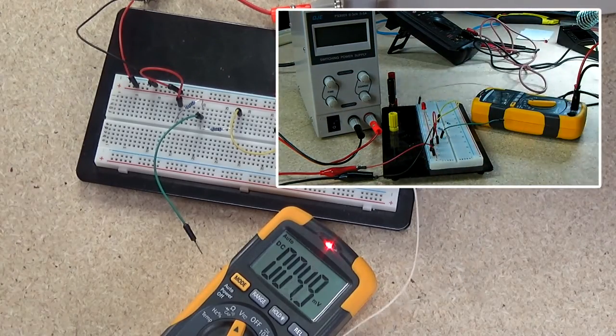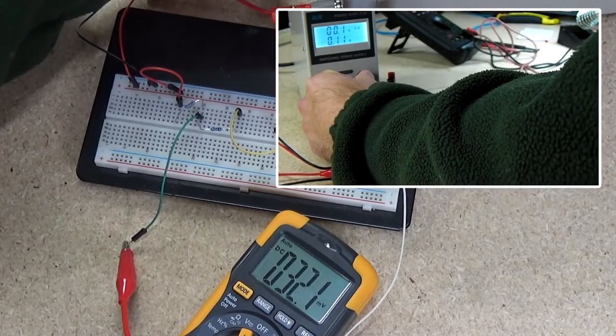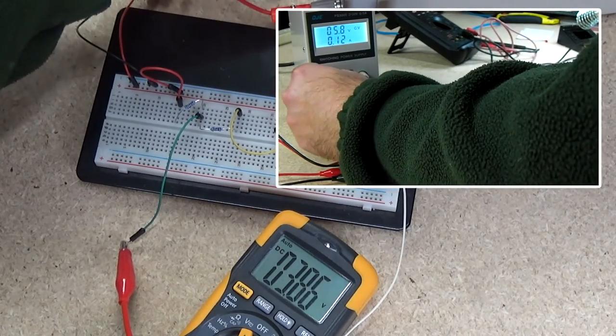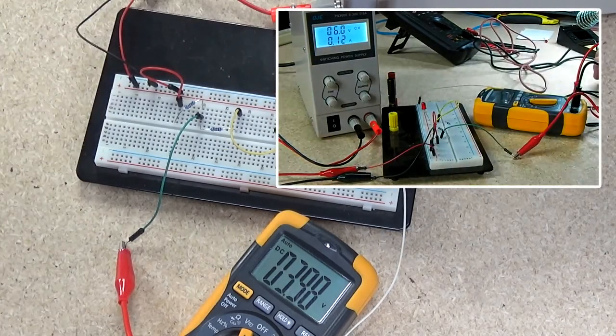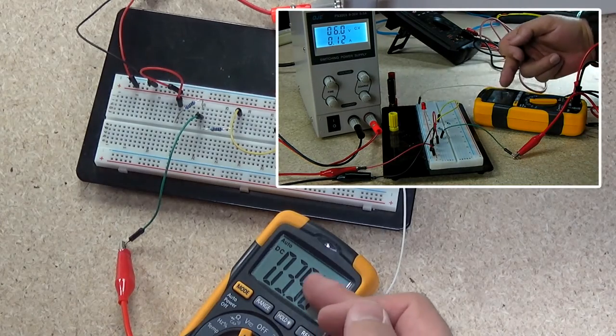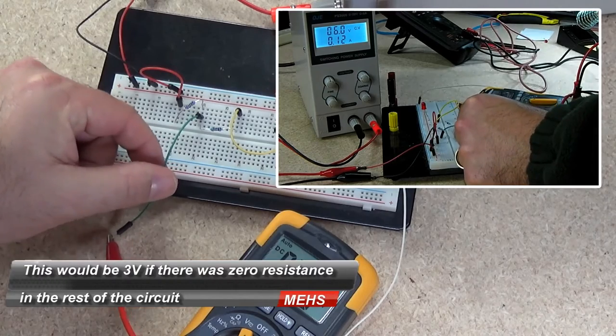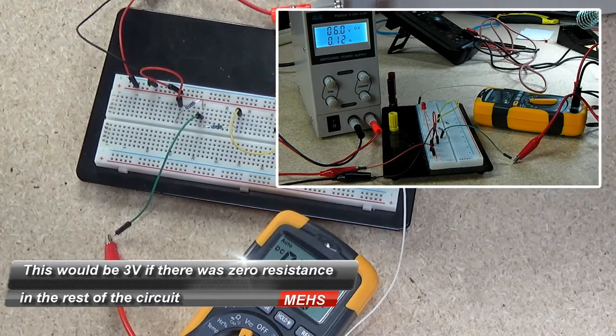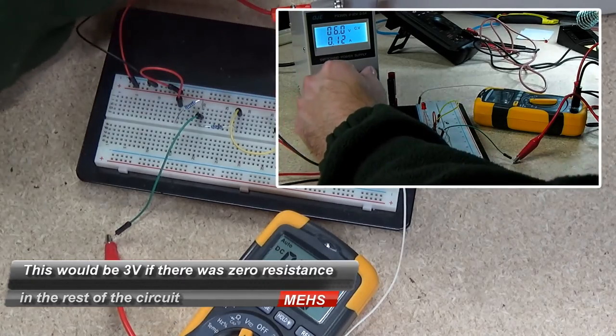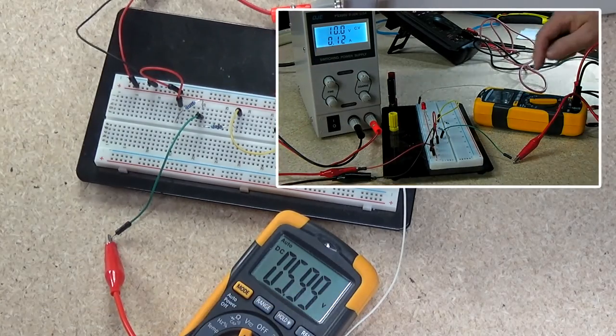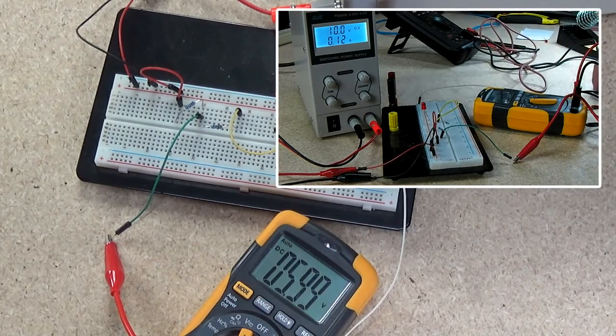Let's dial up to 6V. Okay, so there's 6V. And we're reading 3.98 in between the two resistors here. Alright, so let's try 9V. 10V. Okay, so there you go, there's 10V. And we're getting 6V out on the meter.